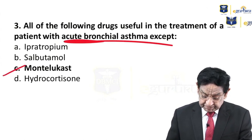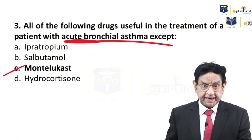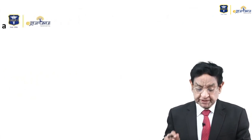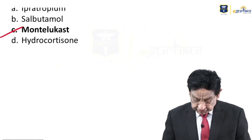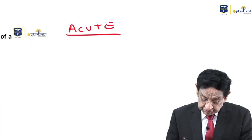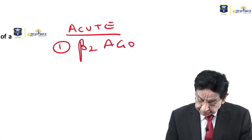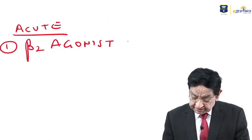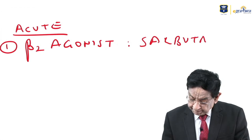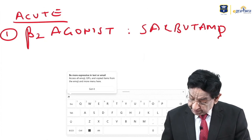Question 3: All the following are used in treatment of acute bronchial asthma except — the answer is Montelukast. We do not use Montelukast in acute attacks. In acute asthma, we use beta-2 agonists. The classical example is salbutamol.